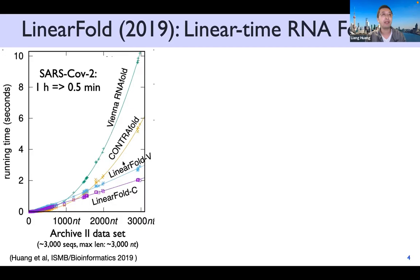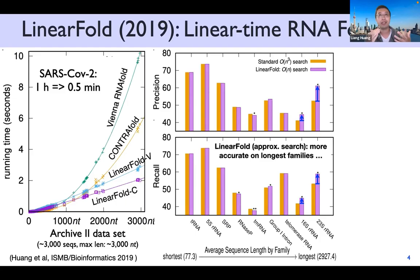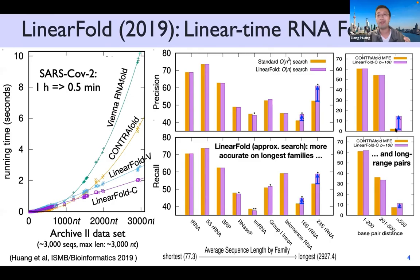LinearFold is much faster for SARS-CoV-2 and runs in linear time, whereas ViennaRNA, CONTRAfold, and RNAstructure all scale cubically with sequence length. More interestingly, even though the search is much faster, it's actually approximate — we neglect parts of the search space that don't look promising — yet even though it's approximate, it's actually better in terms of accuracy. Most people find that contradictory, especially on the hardest problems, the longest families like 16S and 23S ribosomal RNAs, where we show huge improvements in both PPV and sensitivity, and also in long-range base pairs more than 500 nucleotides apart.